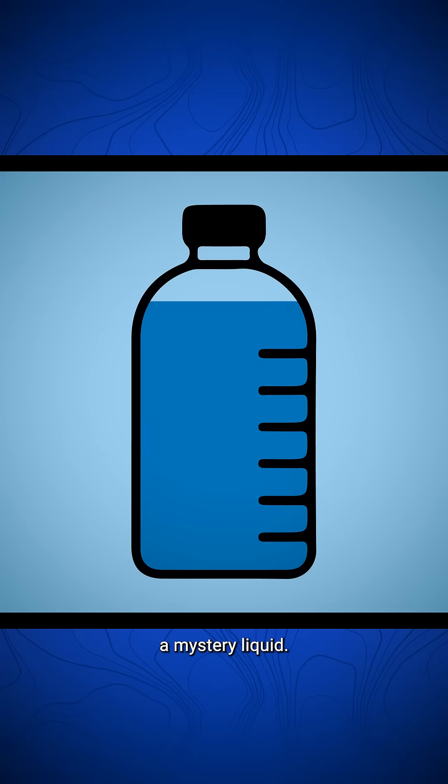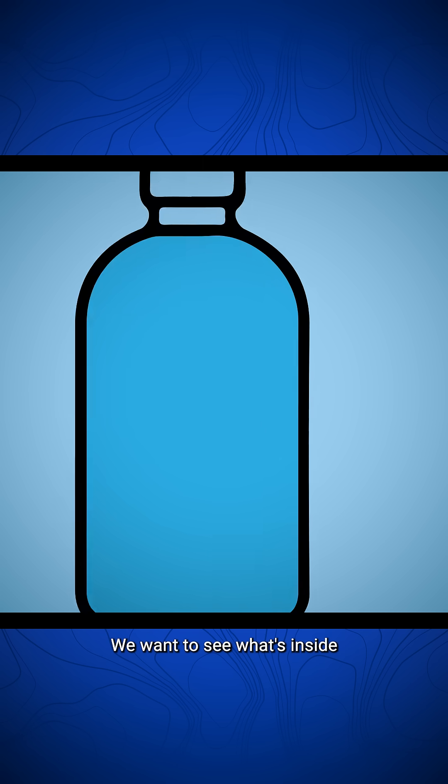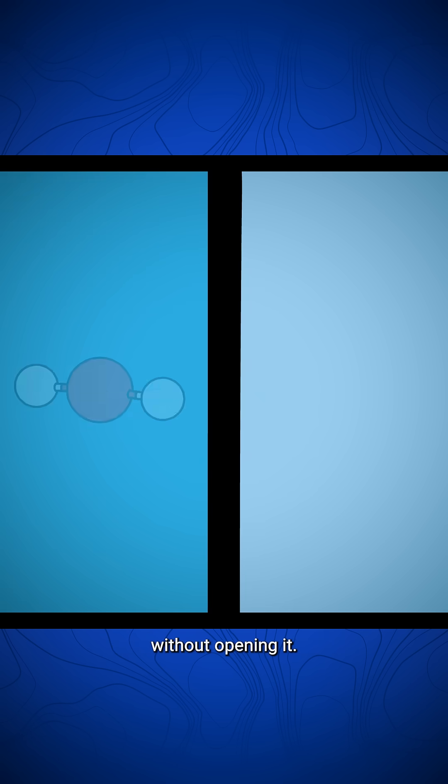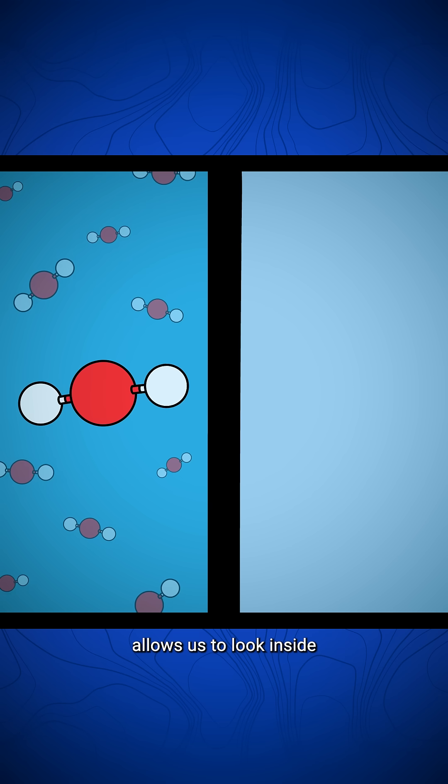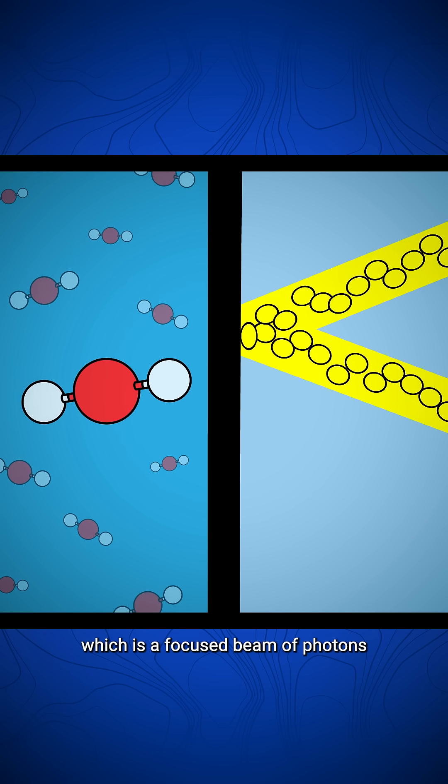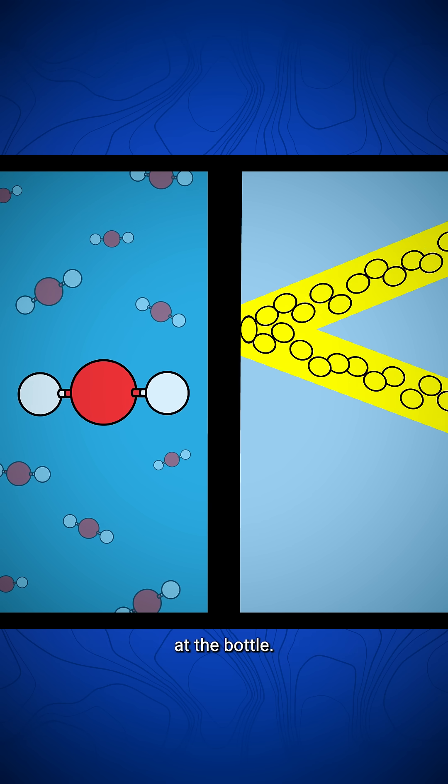This is a bottle containing a mystery liquid. We want to see what's inside without opening it. Raman spectroscopy allows us to look inside by firing a laser, which is a focused beam of photons, at the bottle.